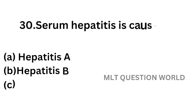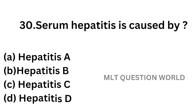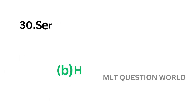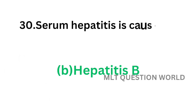Question number 30. Serum hepatitis is caused by: option A, Hepatitis A; option B, Hepatitis B; option C, Hepatitis C; option D, Hepatitis D. The correct answer is option B, Hepatitis B. Serum hepatitis is caused by Hepatitis B (HBsAg).